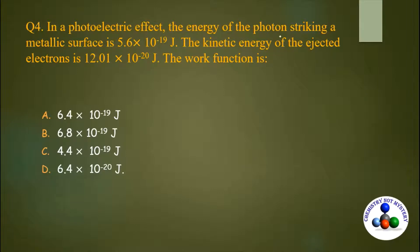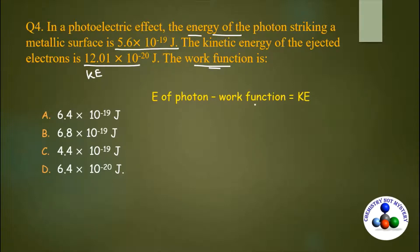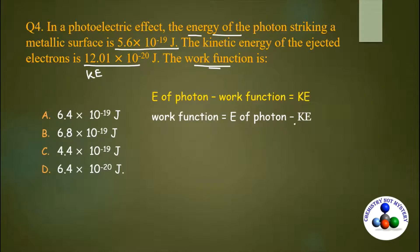Next question: in a photoelectric effect, the energy of a photon striking a metallic surface is 5.6 × 10⁻¹⁹ joules. The kinetic energy of the ejected electron is 12.01 × 10⁻²⁰ joules. Find the work function. Using the formula: energy of photon − work function = kinetic energy. Rearranging: work function = energy of photon − kinetic energy.